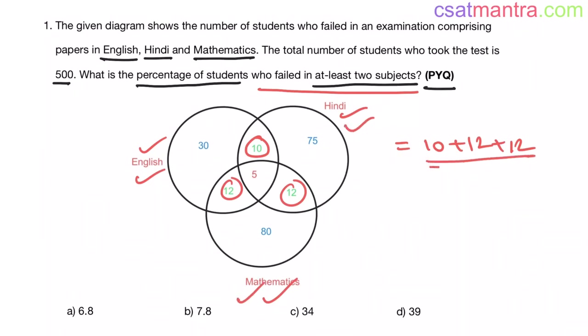So this is the number of students who failed in only two subjects which equals 34. The number of students who failed in three subjects is 5, so the number of students who failed in at least two subjects is 34 plus 5, that equals 39.